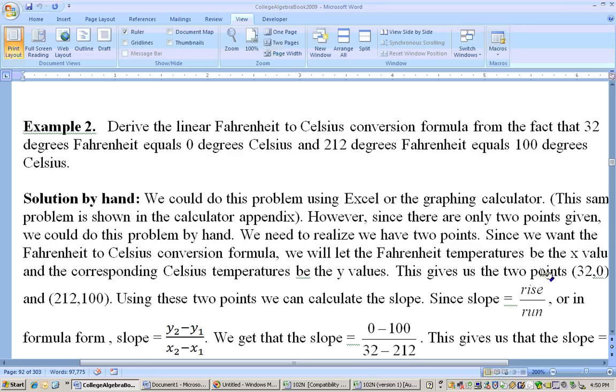0 minus 100, then I have to do this x value minus this x value, 32 minus 212. I could have also done it in the opposite order, 100 minus 0 over 212 minus 32.